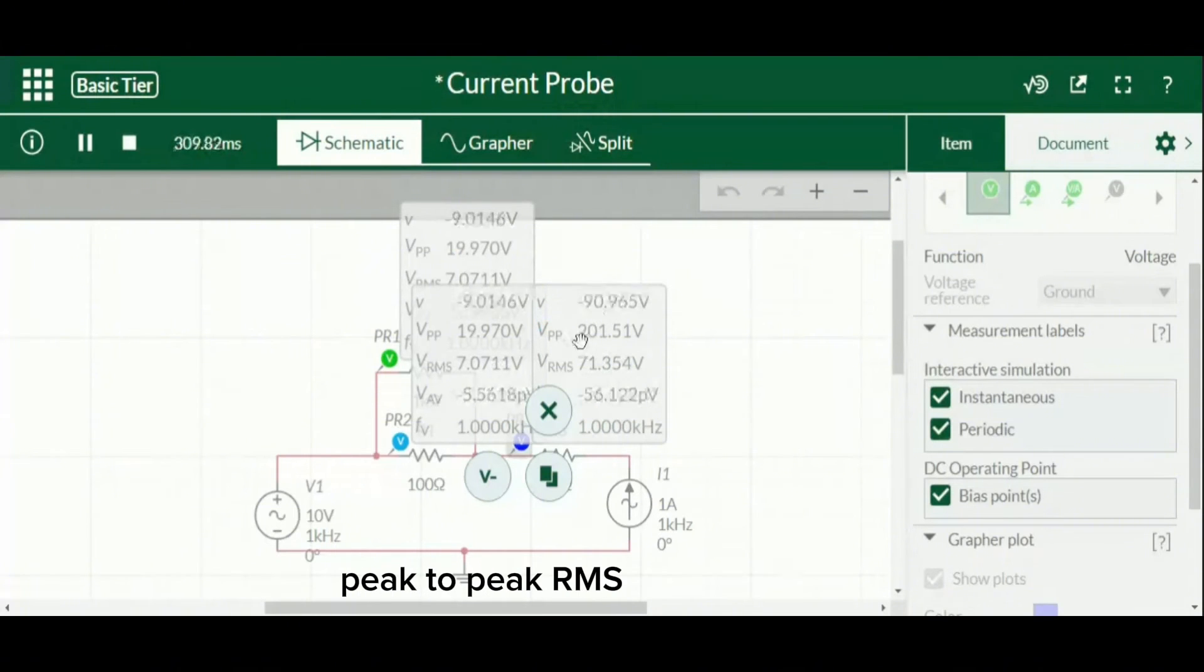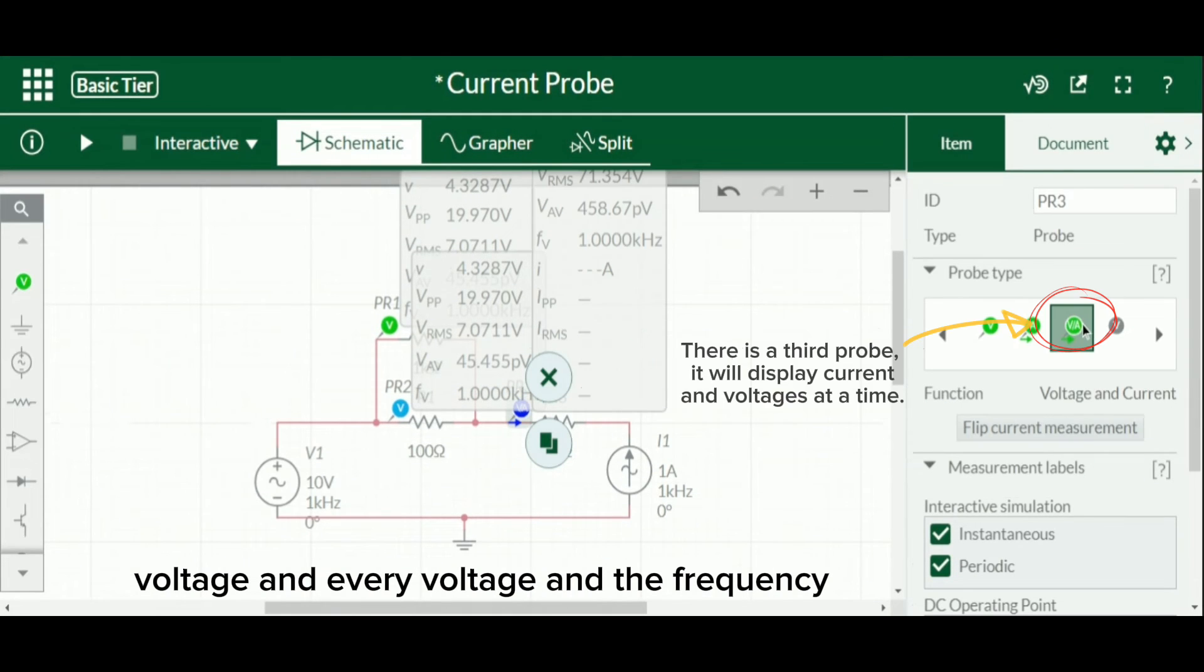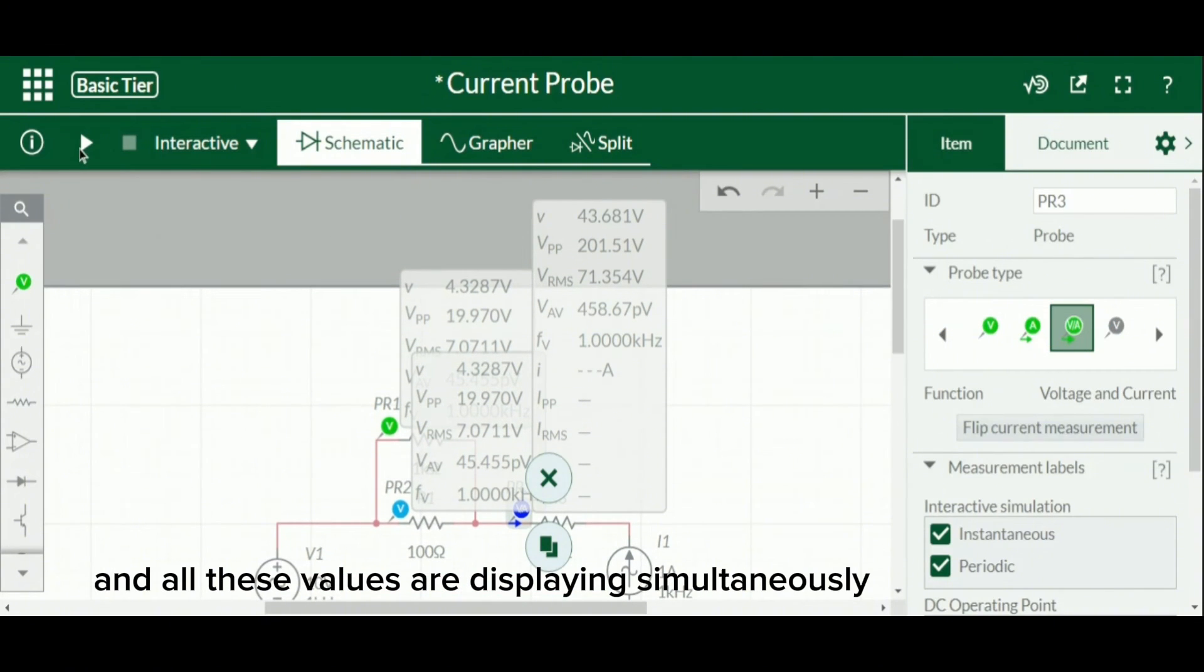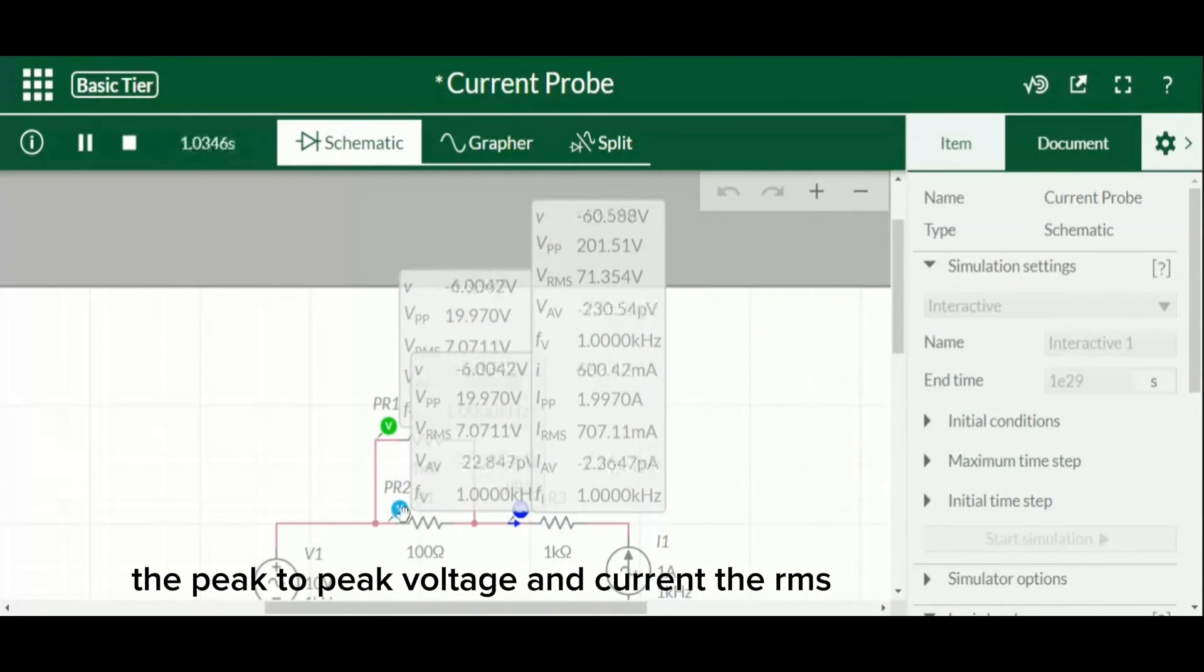Now this is the voltage and current probe, and all these values are displaying simultaneously: the voltage and current, the instantaneous voltage and current, the peak-to-peak voltage and current, the RMS voltage and current.